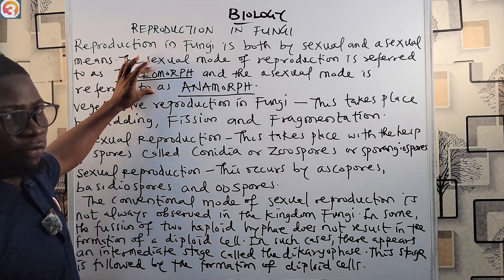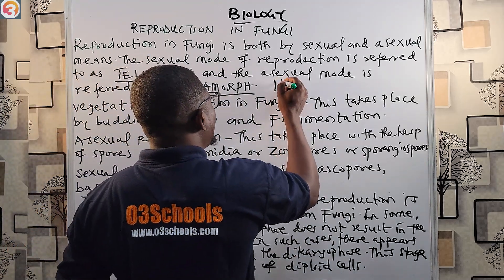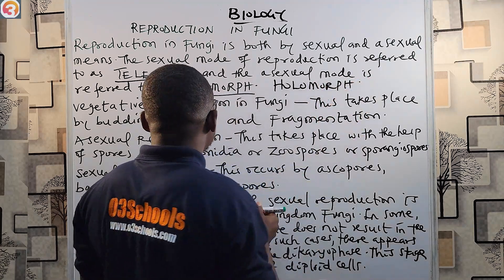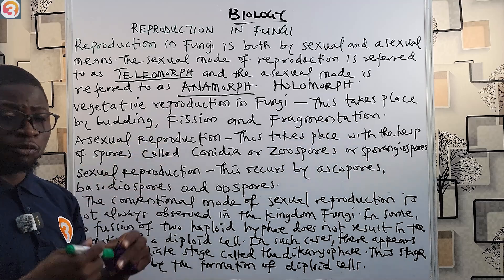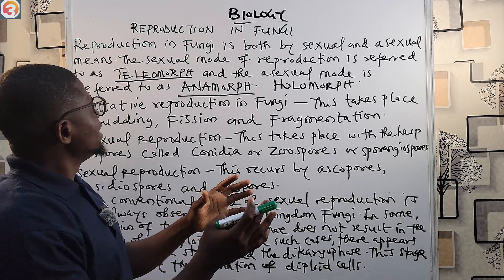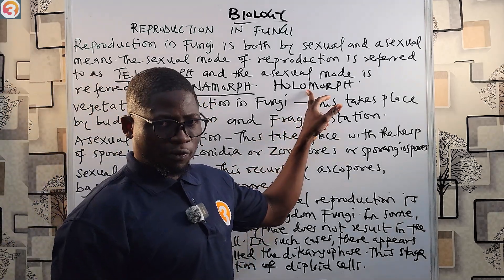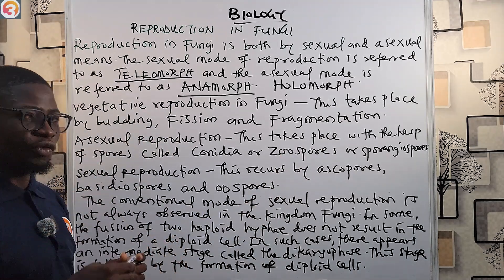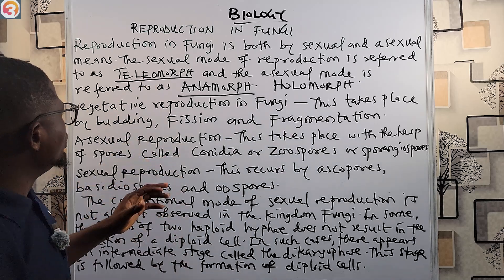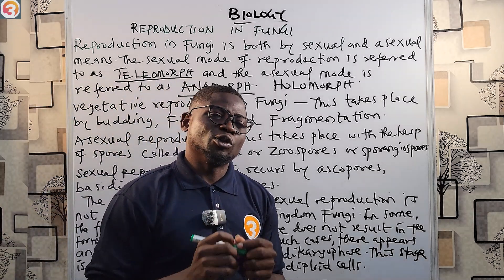These two modes together are called the holomorph. The teleomorph is the fruiting body, and together the teleomorph and the anamorph are called the holomorph. Please take note: the sexual mode of reproduction in fungi is the teleomorph, while the asexual mode in fungi is the anamorph.